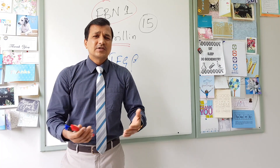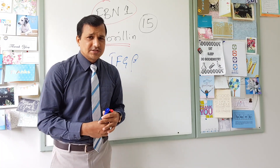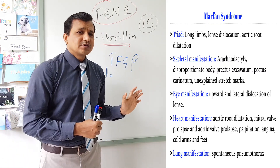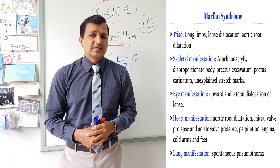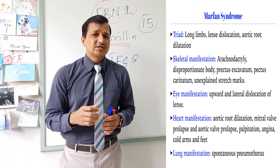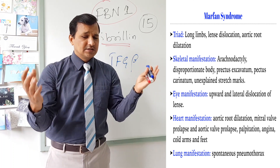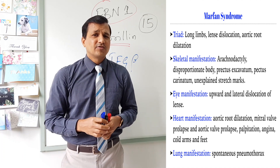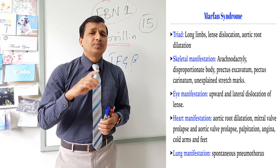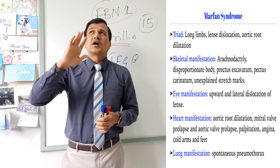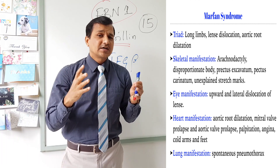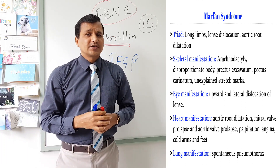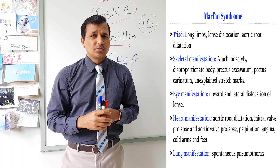Regarding eye manifestations, one of the main features of Marfan syndrome is dislocation of the lens. Lens dislocation can occur in any direction across 360 degrees, but most commonly it is superior temporal dislocation — upward and lateral — which is the most common direction of lens dislocation seen in Marfan syndrome patients.